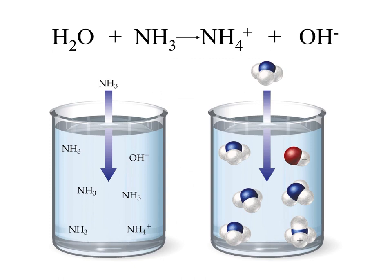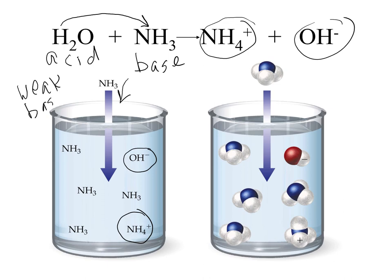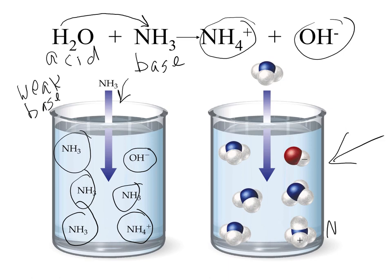This slide shows us at the molecular level the reaction between water, which is our acid, and ammonia, which is our base. The acid donates the hydrogen ion to the base, the acceptor. We end up with NH4 and hydroxide. This is showing us that when we take ammonia gas and bubble it into water, we form hydroxide ion and ammonium ion. But remember, this is a weak base — almost all of the NH3 stays together as molecules, and very few ions are formed.